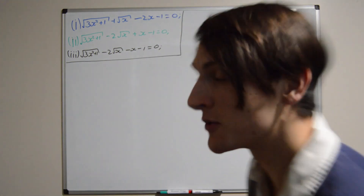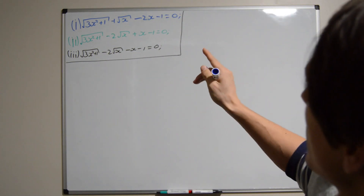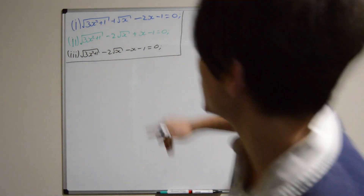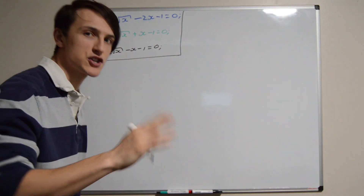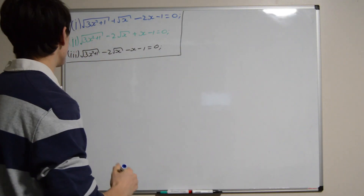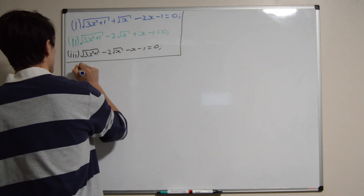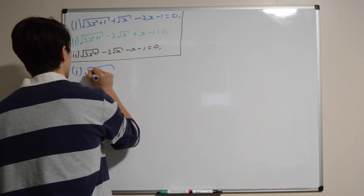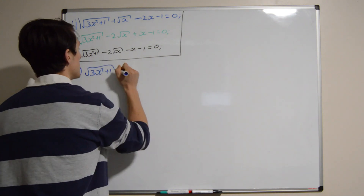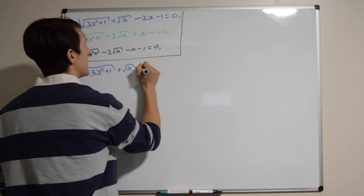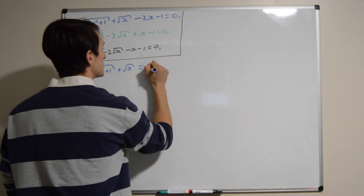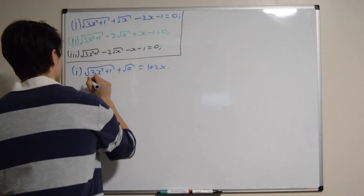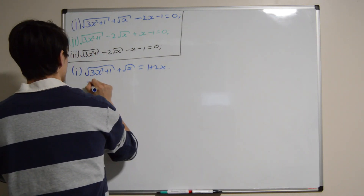So, first of all, I'm going to zoom out and get closer to the camera, and I'm looking at our first equation. The main problem for us is definitely the square roots. So I'm going to try to make a crude rearrangement — let's just move everything with the square root onto one side. On the left hand side, I'm going to get 3x squared plus 1 plus square root of x, and this is going to be equal to 1 plus 2x. Now let's just square it — that's the method we use to get rid of square roots.